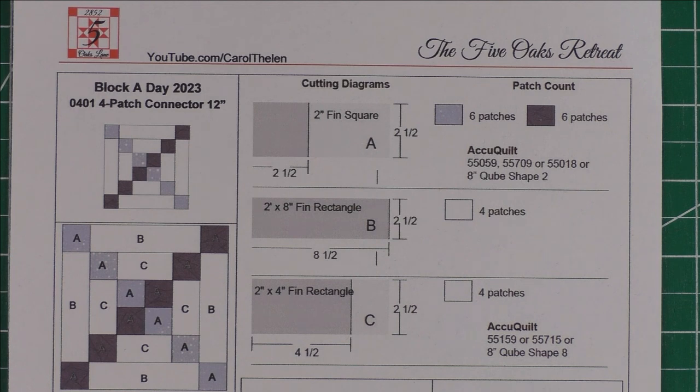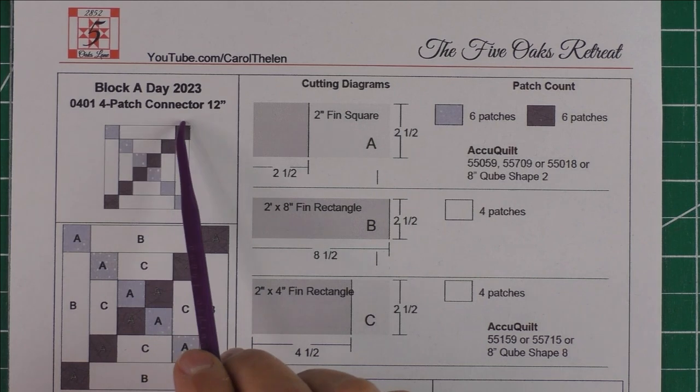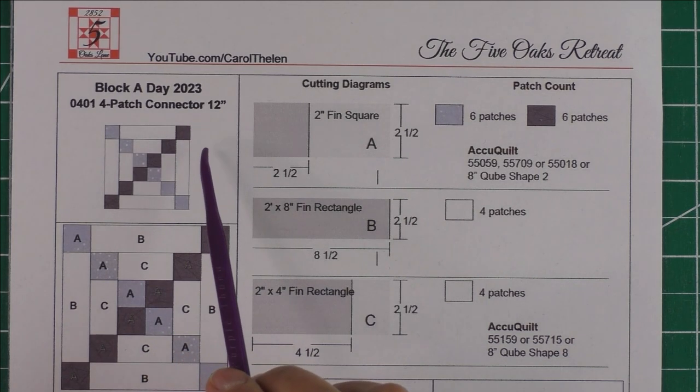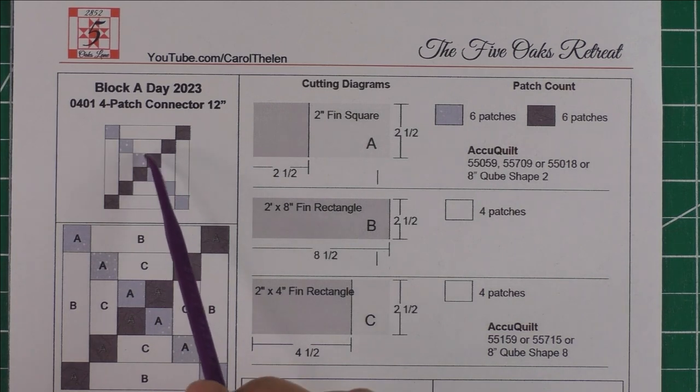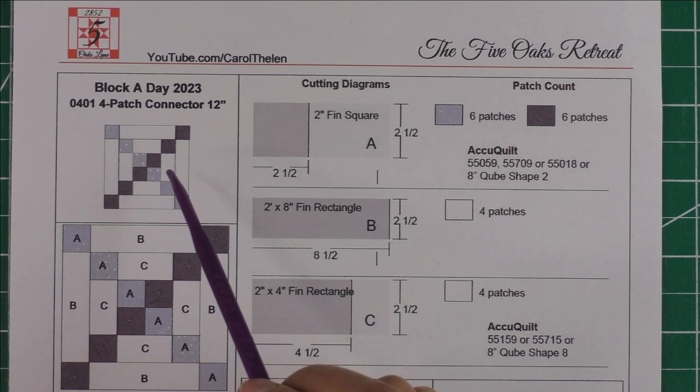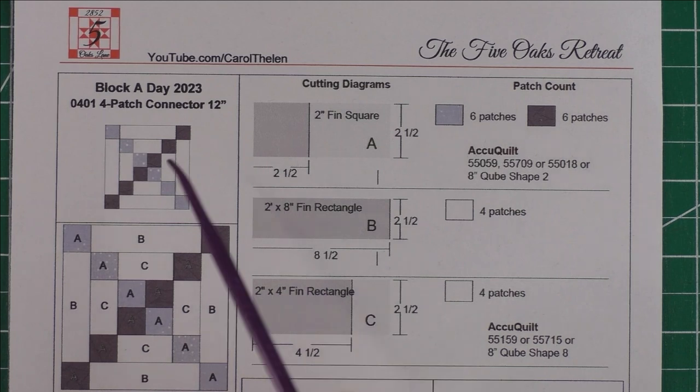Here we are in April, April 1st, and the block we have today is the four patch connector. It will be sampler setting number four. This is very similar to the nine patch connector that we did earlier, just slightly different, so you might like this better.